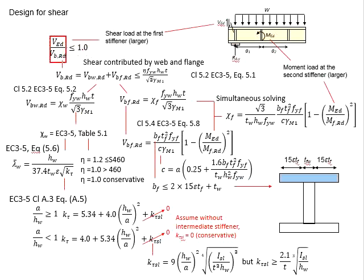For that, the ratio needs to be less than 1.0. The shear load is obtained from the shear force diagram, where the largest shear load is to be obtained. It normally occurs at the support regions, where the first stiffener occurs.